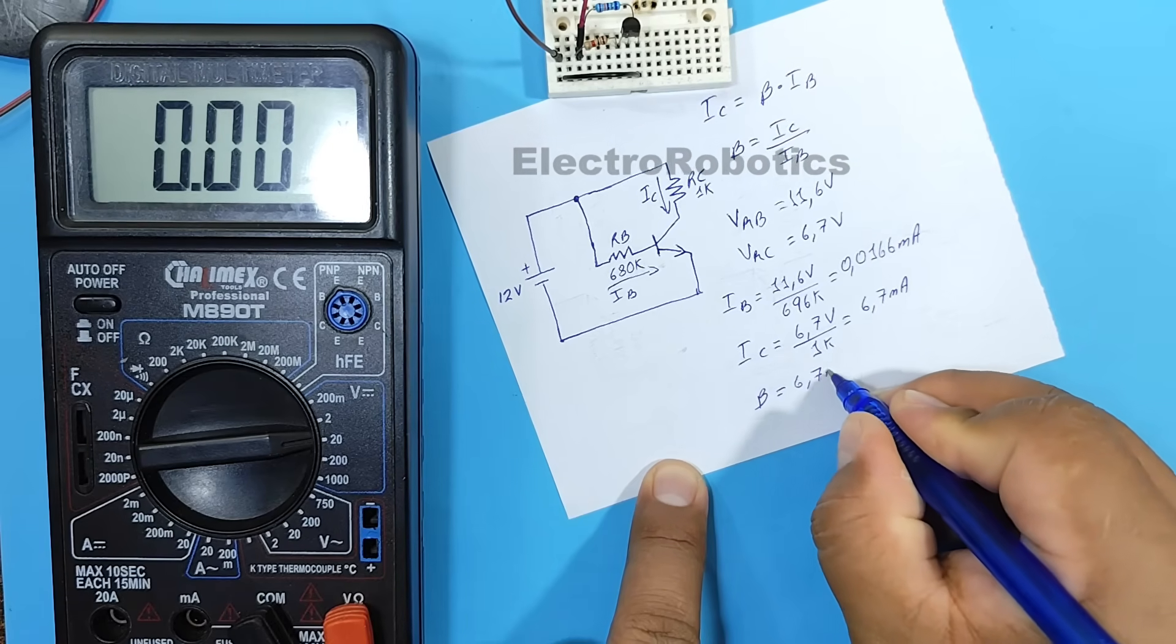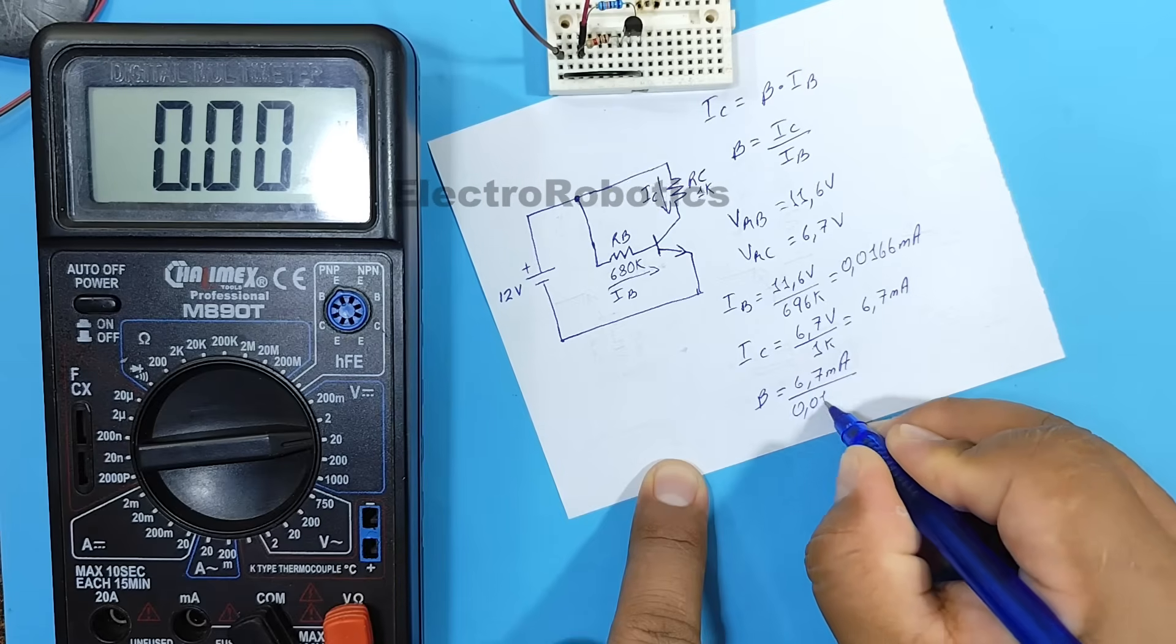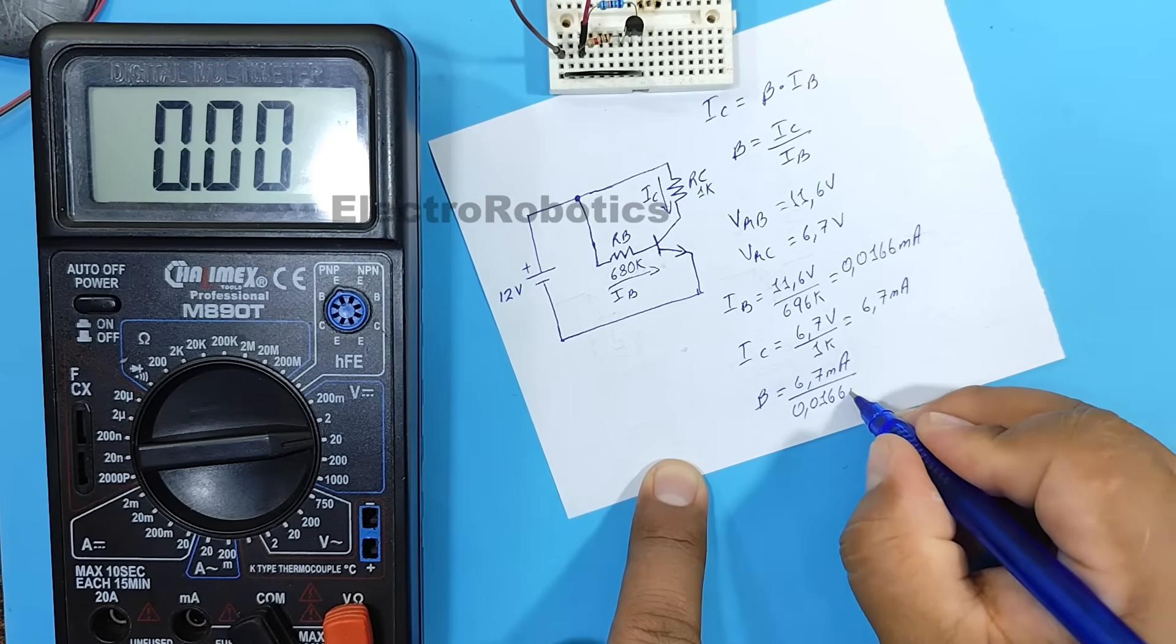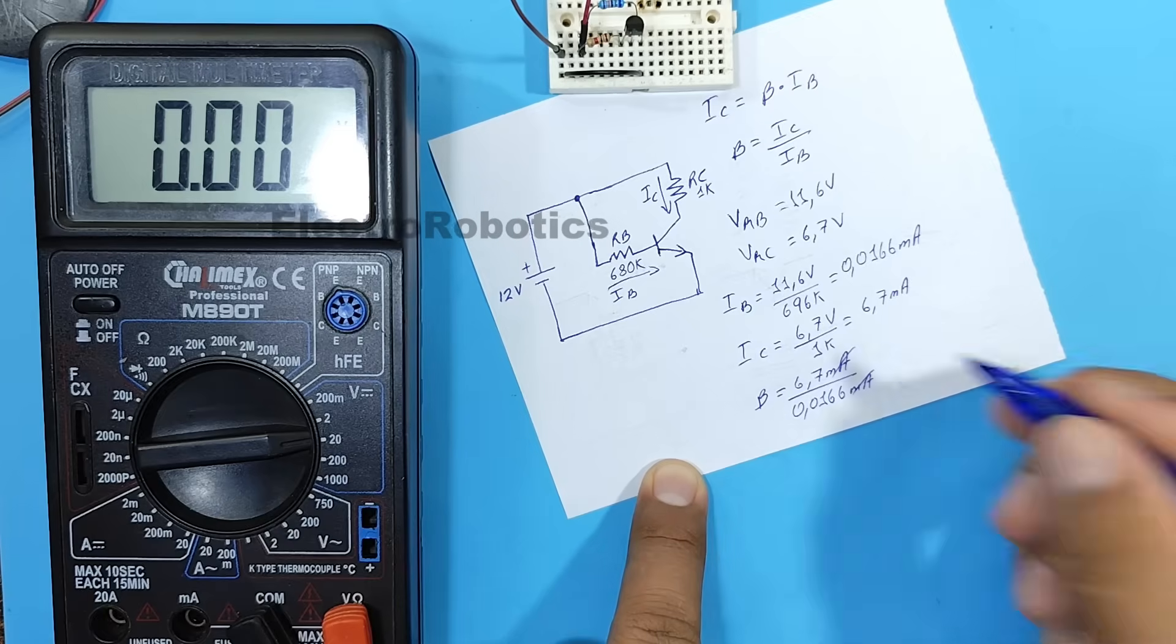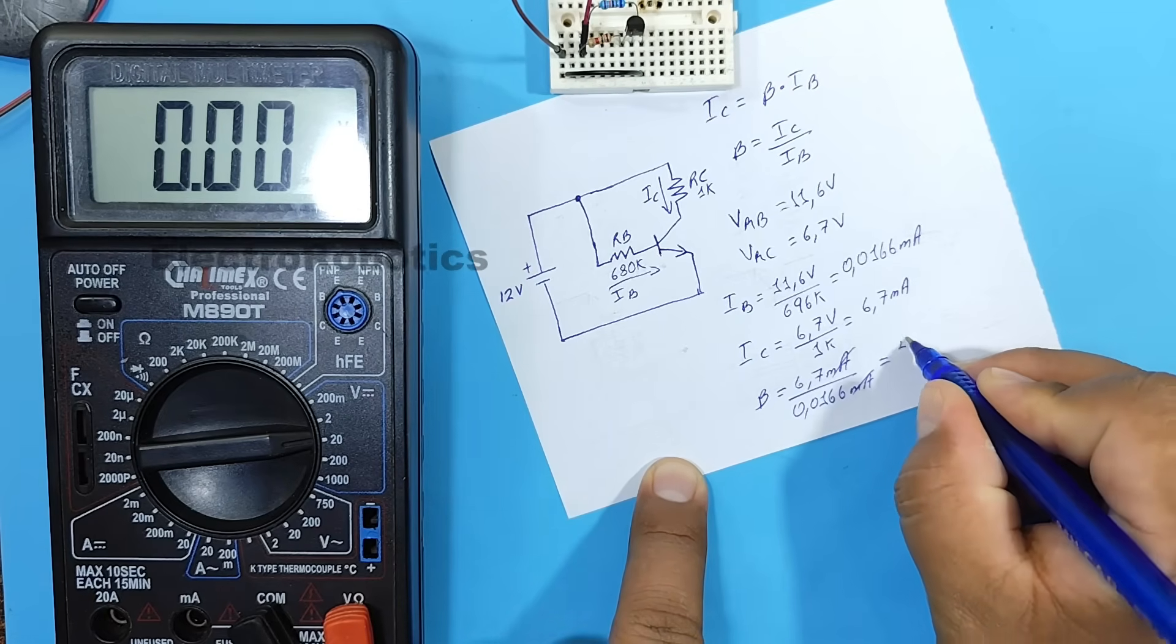6.7 milliamps divided by 0.0166 milliamps. This would be equal to a gain of 403.